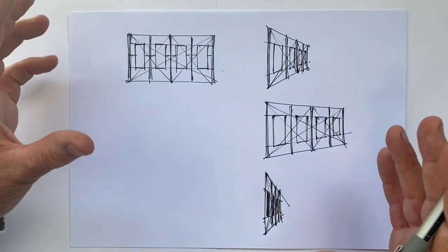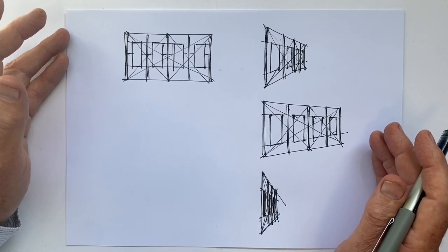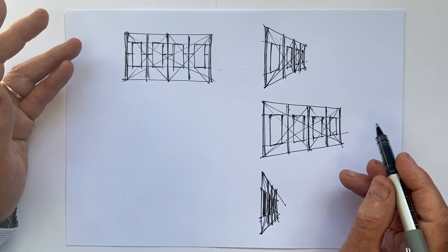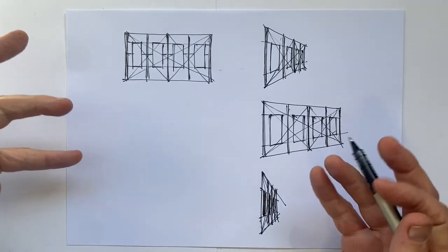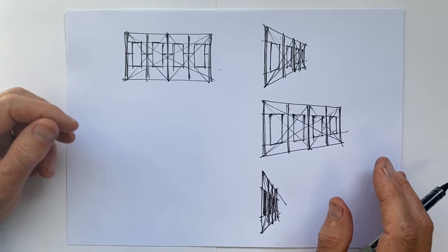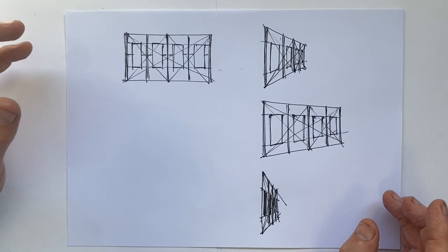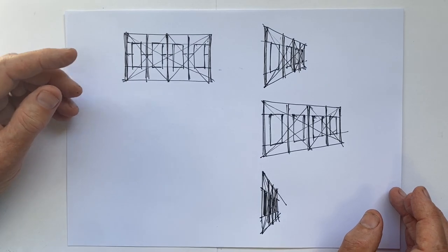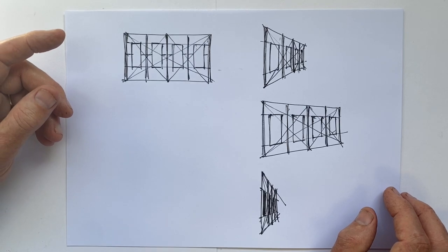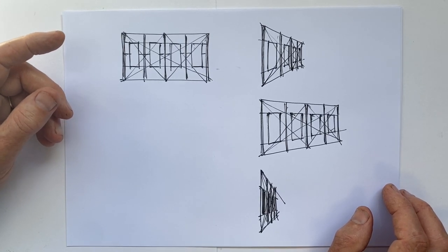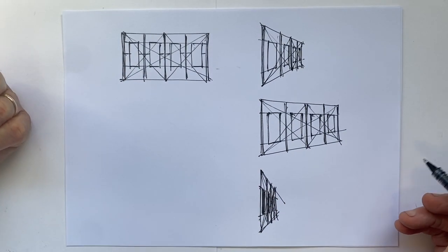But I hope this very simple and quick way of establishing how foreshortening occurs and where it occurs for a given wall at a given slope, for a given sized wall and a given slope away from us, proves helpful next time you're doing a drawing and faced with the challenge of how to fit the windows or the columns or whatever we're talking about into these spaces.